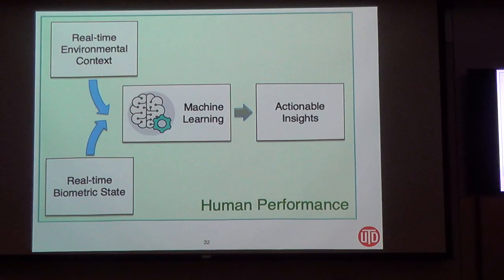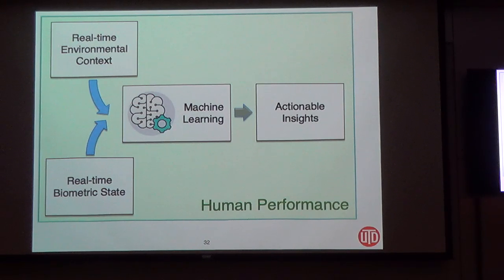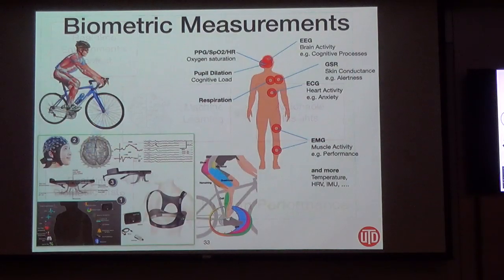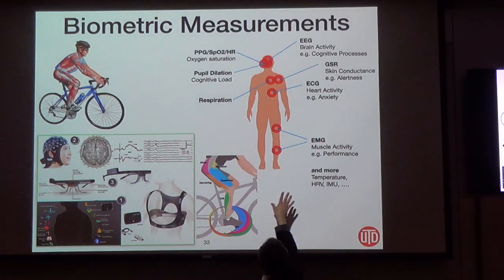We bring together about 2,000 environmental parameters with about 17,000 biometric parameters. Every EEG electrode — we look at the whole frequency spectrum — along with ECGs, galvanic skin response, blood pressure, and blood oxygen. You've got a suit that's measuring it all, and we bring that together with machine learning. These are the eye-tracking glasses; you can see the EEGs, and that's how you get the features.